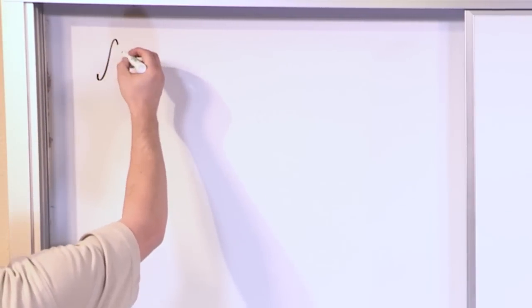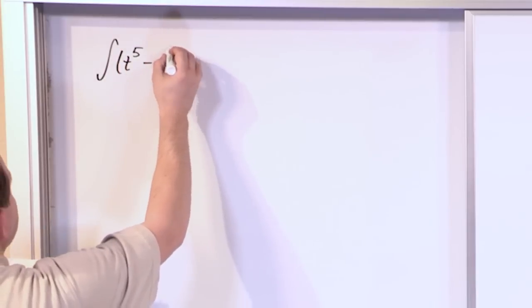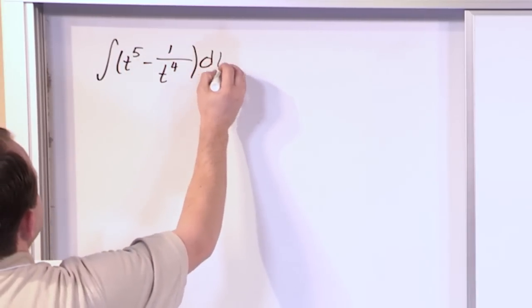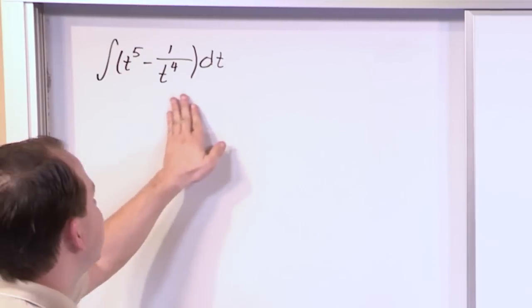So let's say you had a problem that was the integral of t to the fifth power minus 1 over t to the fourth power, dt. The first thing I want to point out is there's no x here, right? There's no x's. So that's something you kind of need to get used to.